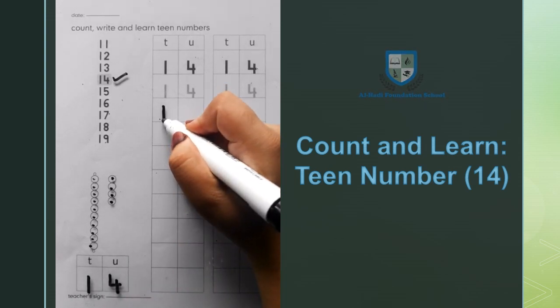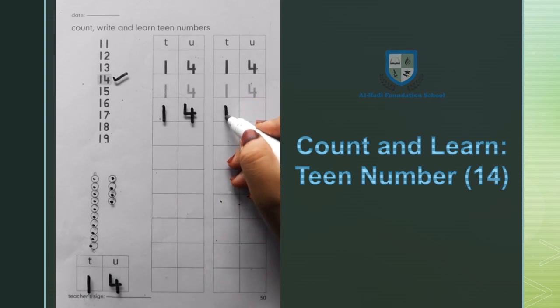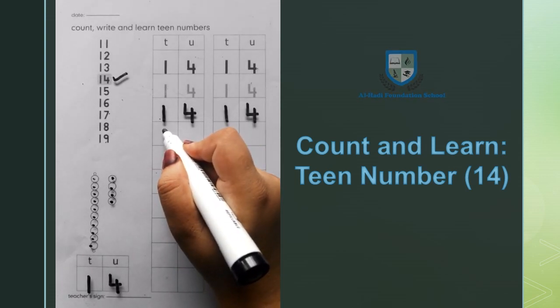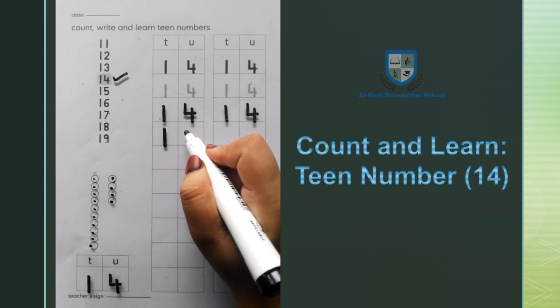इसी तरह हमने 14 को दोनों lines में लिखना है। सबसे पहले हम लिखेंगे 1, उसके बाद अगला number लिखेंगे 4। 1 को हम block के दरमियान में से start करेंगे और फिर इसे line पे हतम करेंगे। इसी तरह 4 को भी हमने लिखना है।